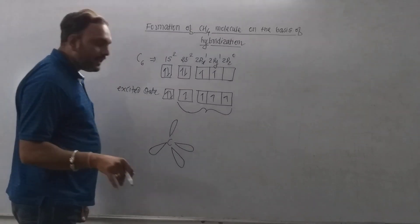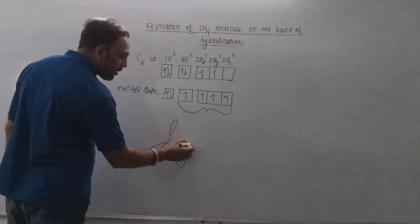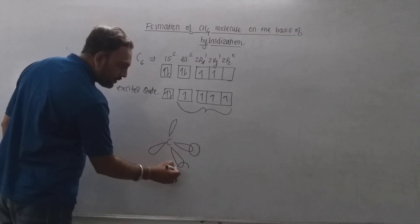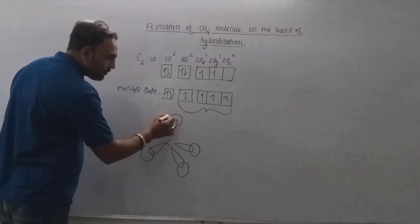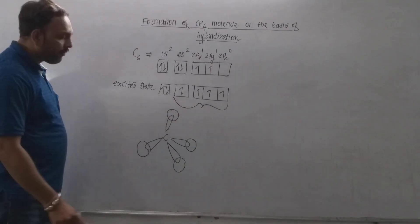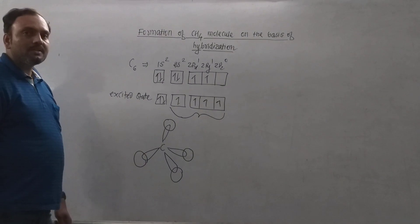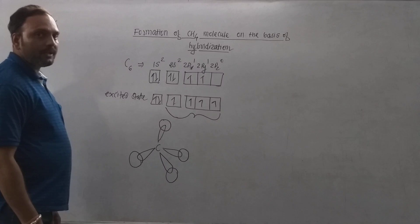Now 4 hydrogen atoms having unpaired electron in s orbital overlap with SP3 hybrid orbitals of carbon which lead to the formation of 4 C-H sigma bonds. This leads to the formation of methane molecule.